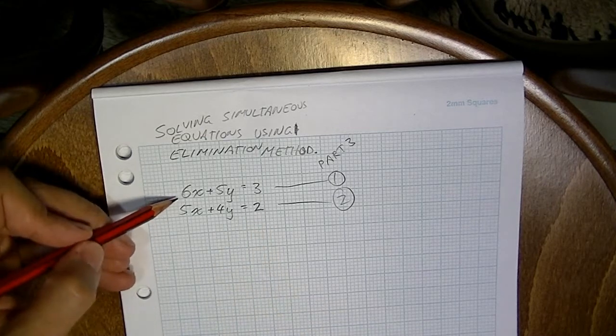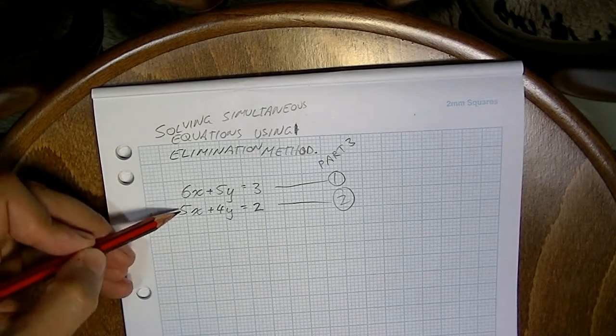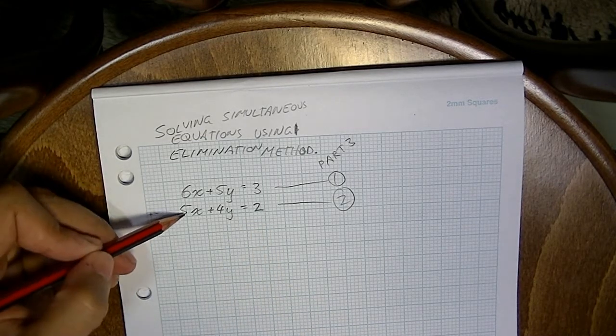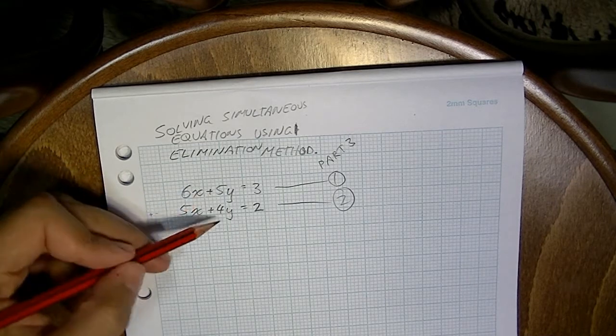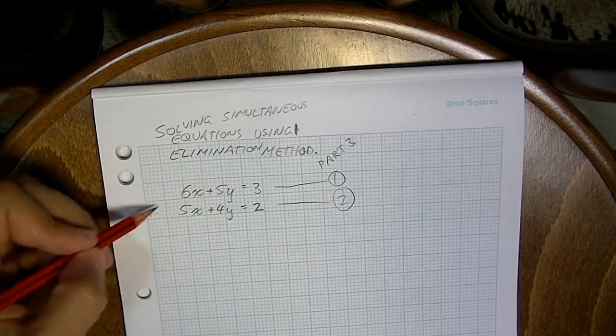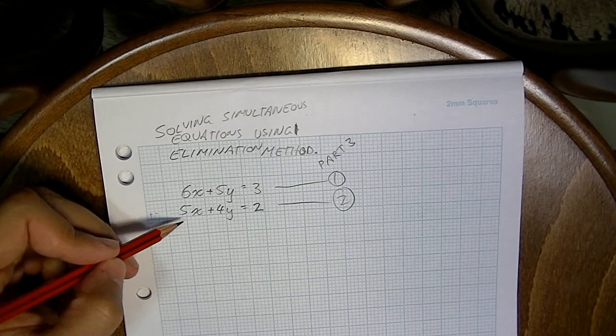Now you can see here that this doesn't look like it's going to work. 6x plus 5x, that's not going to eliminate anything. 5y plus 4y, that's not going to eliminate anything. If I subtract them, it's not going to eliminate anything either.